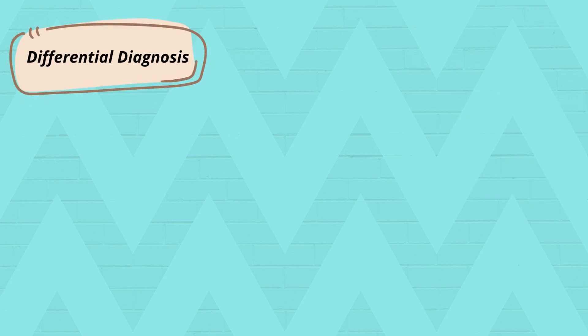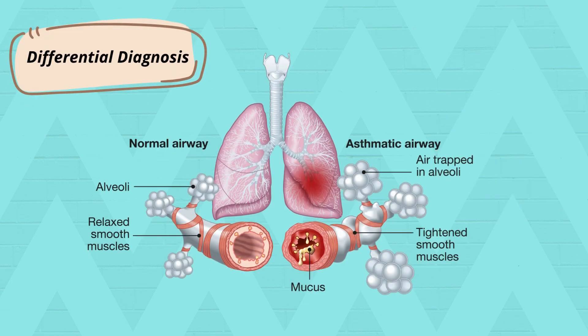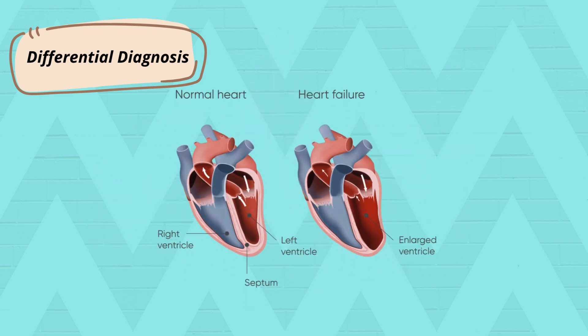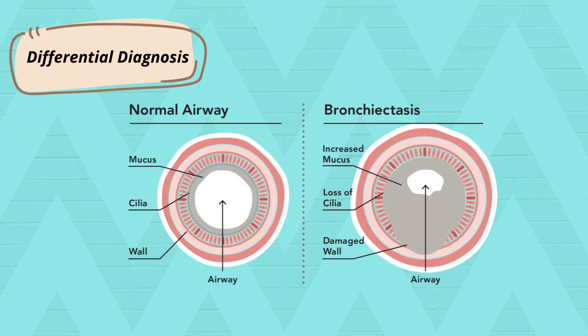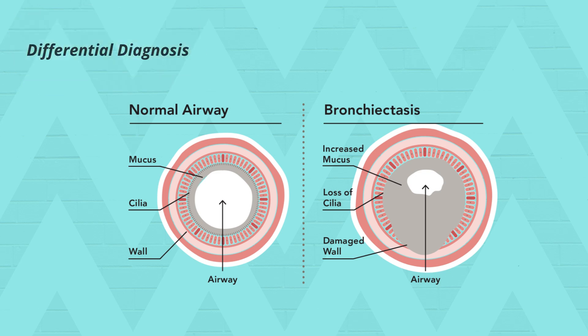Several conditions can mimic COPD, so it's essential to consider the differential diagnosis. Asthma usually has an earlier onset and is often reversible. Heart failure can also cause breathlessness and fatigue. Bronchiectasis and interstitial lung disease may show similar patterns on imaging or spirometry. A good clinical history and targeted testing help to clarify the diagnosis.